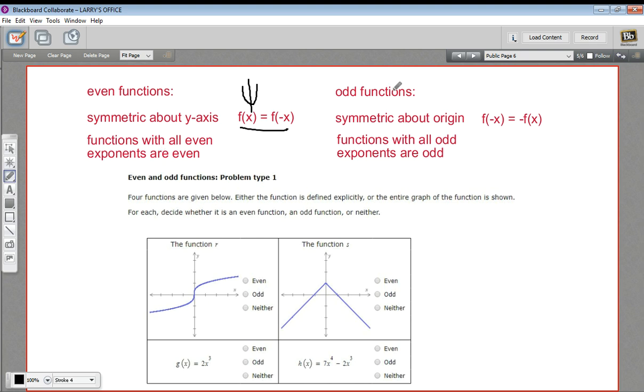Odd functions are symmetric about the origin. So if you spun them 180 degrees, they would look the same. That's origin symmetry.